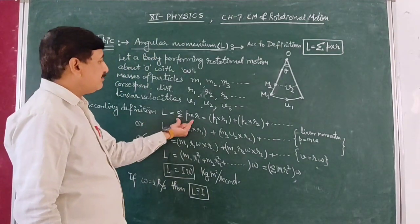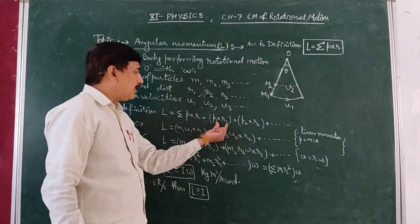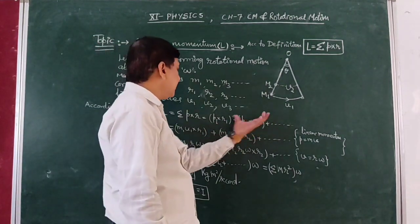According to definition, we have sigma PR. Sigma means summation. First particle is PR, second is PR, third is PR.